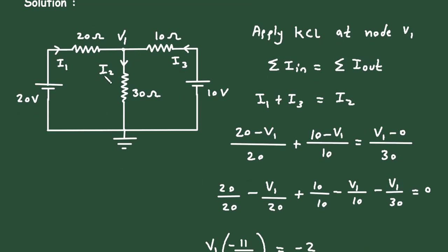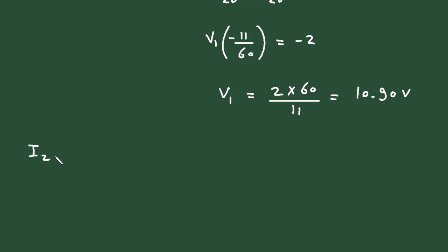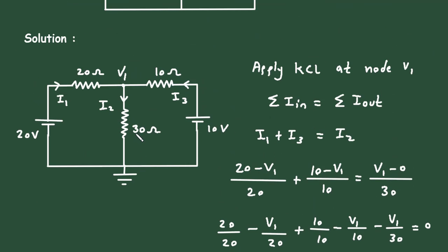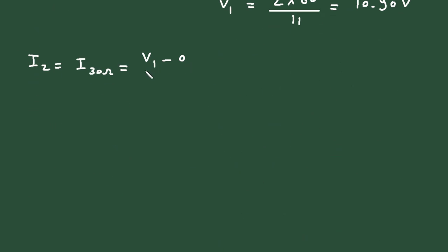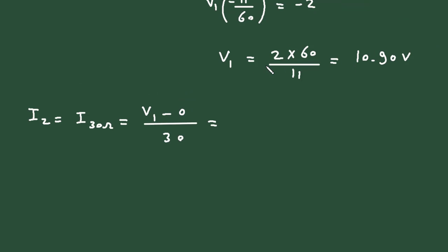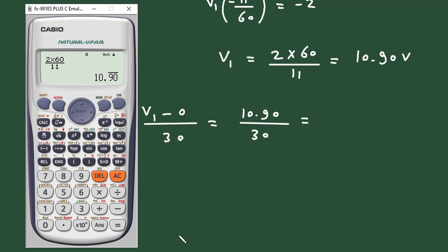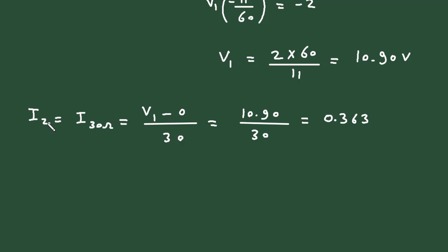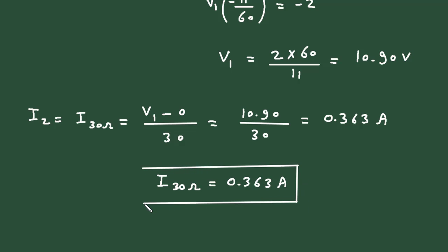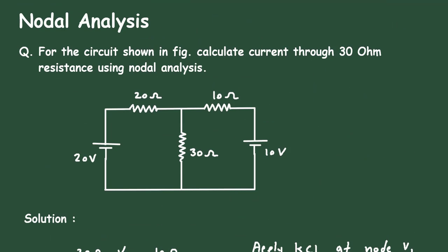Now we have to find the current through 30 Ohm, which is I2. So I2, the current through 30 Ohm, equals V1 minus 0 divided by 30. The value of V1 is 10.90, so I2 equals 10.90 divided by 30, which equals 0.363 Ampere. This is the value of I30Ω — 0.363 A. This is how we find the current using nodal analysis.